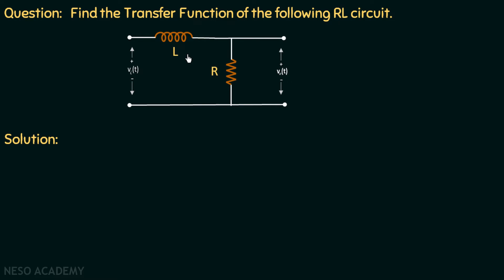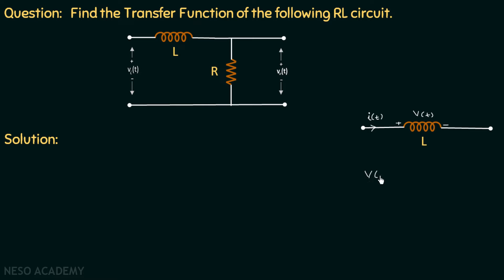So let's find out the Laplace transform of an inductor, and then we will come back to the solution. We have an inductor here. By finding the Laplace transform of an inductor, we actually find out the impedance offered by the inductor in the Laplace domain. If we assume I(t) is the current traveling through this inductor, a voltage V(t) is developed across it. Writing Ohm's law for this inductor: V(t) = L × dI(t)/dt, where V(t) is the voltage across the inductor, L is the inductance, and I(t) is the current.